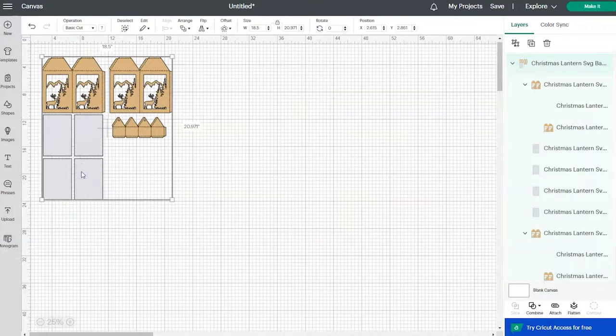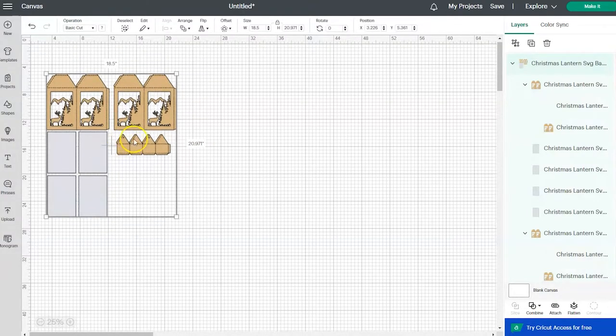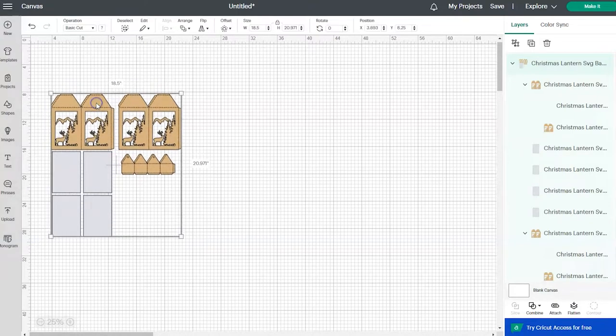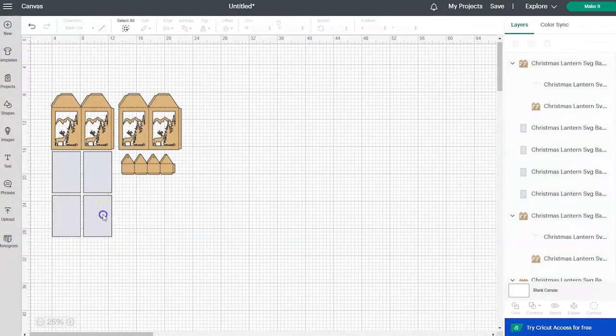And then I'm going to click on the minus sign so I can see everything just a little bit better. The next thing we're going to do is ungroup this design so that we can work with the individual pieces. You'll notice right now that if you select any part of the design, it selects everything. So to fix that, you'll just right click and choose ungroup.